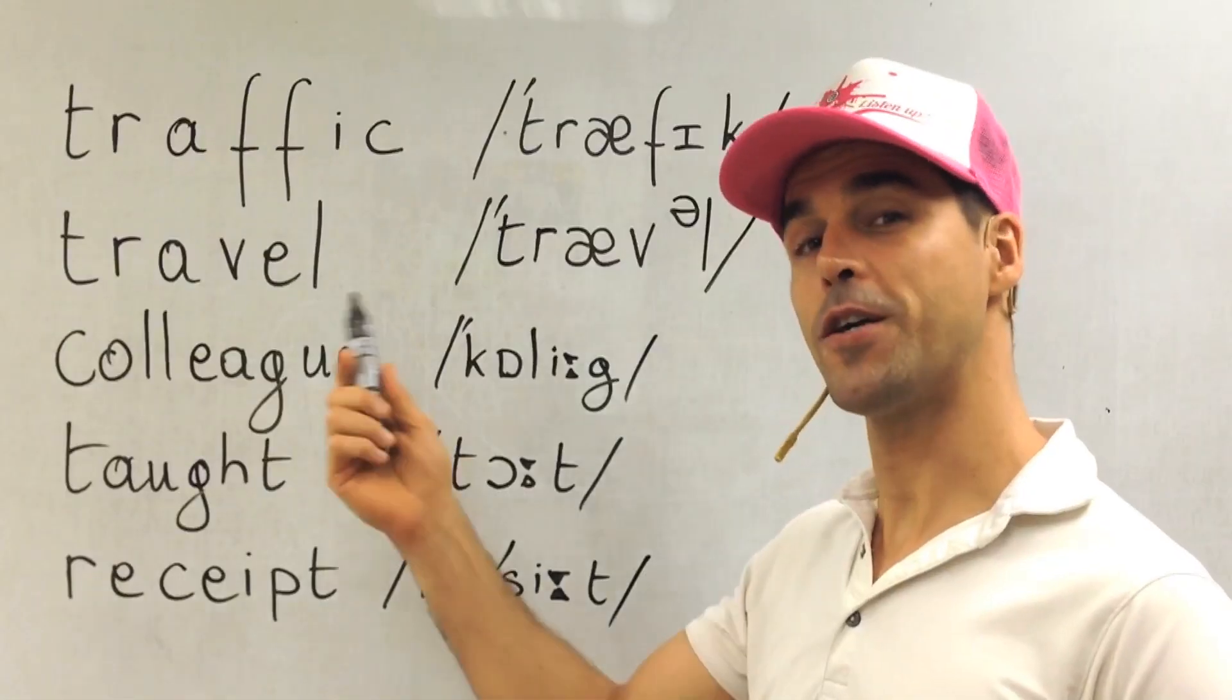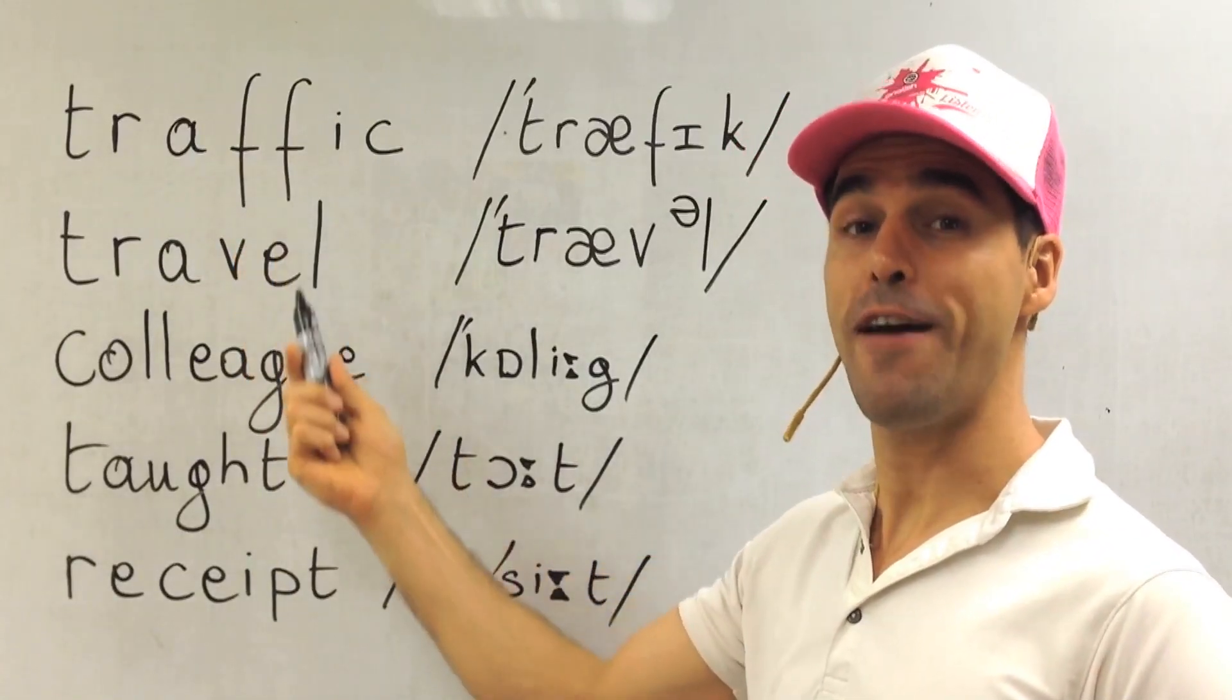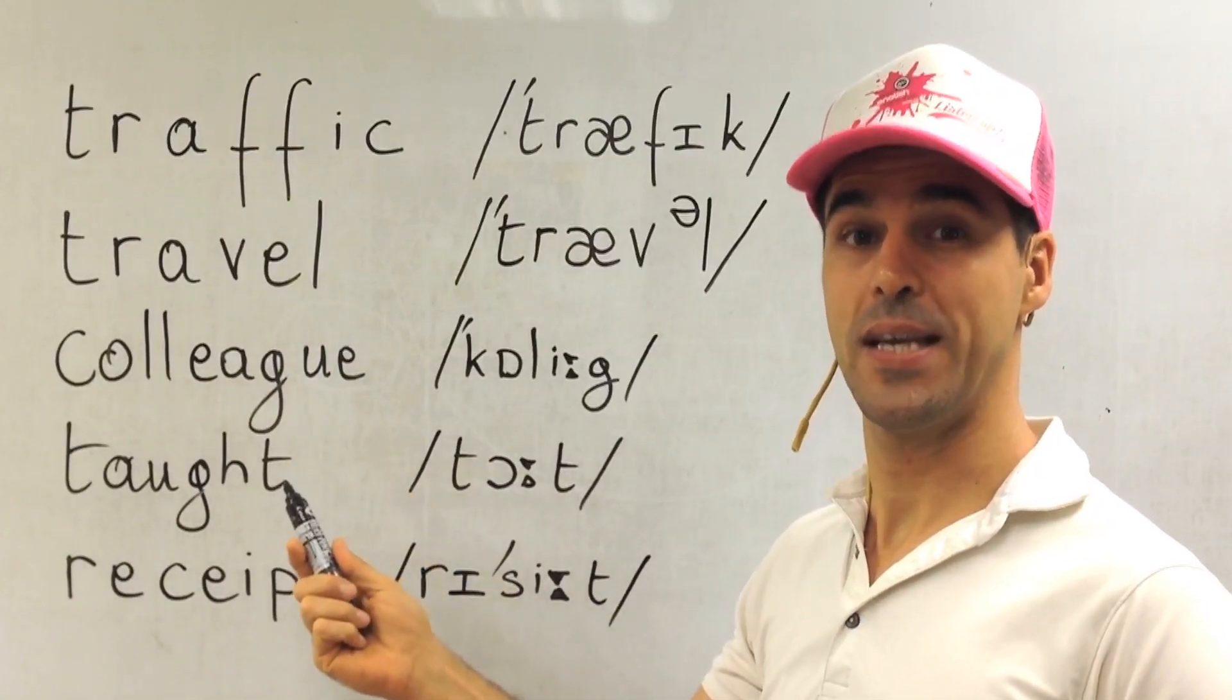Now you know. So here are the correct ones again. Traffic. Travel. Colleague. Taught. Receipt.